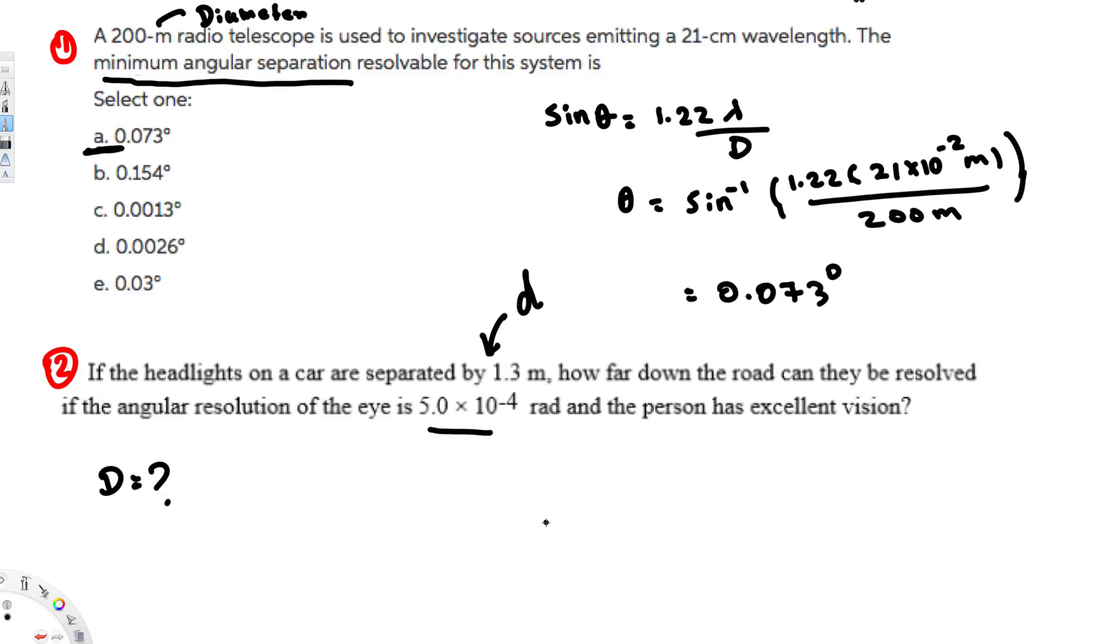Now to find this we can use the angular separation equation. That is theta equals d, the separation between the headlights, over the distance between the observer and the source, that is capital D. Now since we are trying to find capital D, let's rearrange this equation.